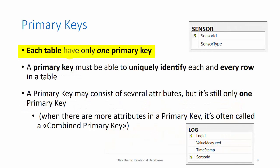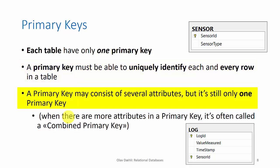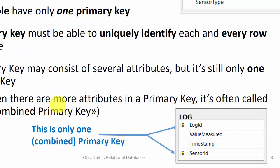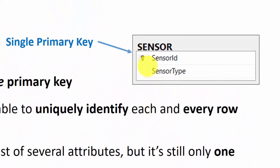Each table in a relational database must have exactly one primary key. The primary key must be able to uniquely identify each row in the table. The primary key may consist of several fields, but it will still be considered as only one primary key. Here we see one example where two columns in combination constitute one combined primary key, and another table with one column as the primary key.